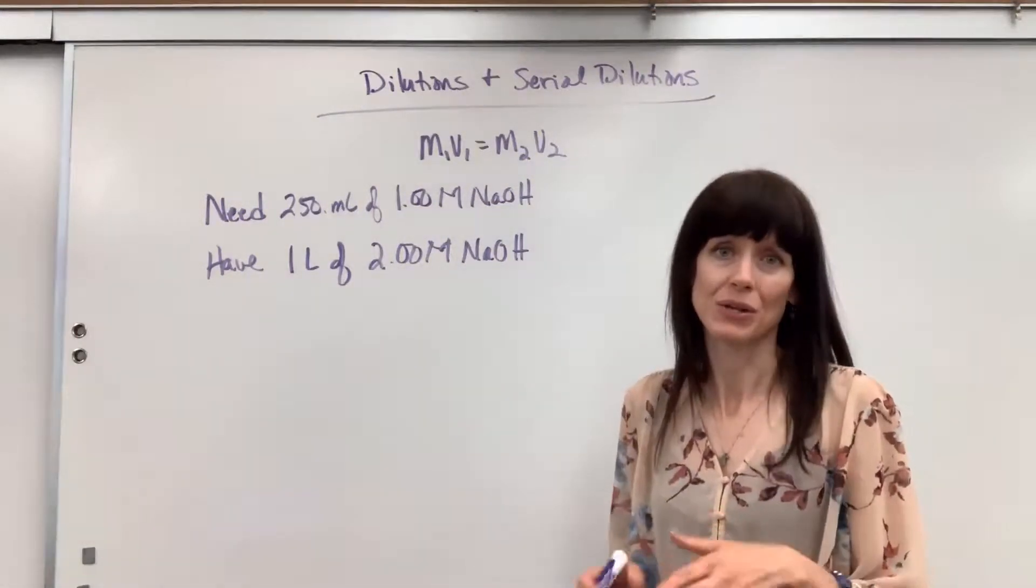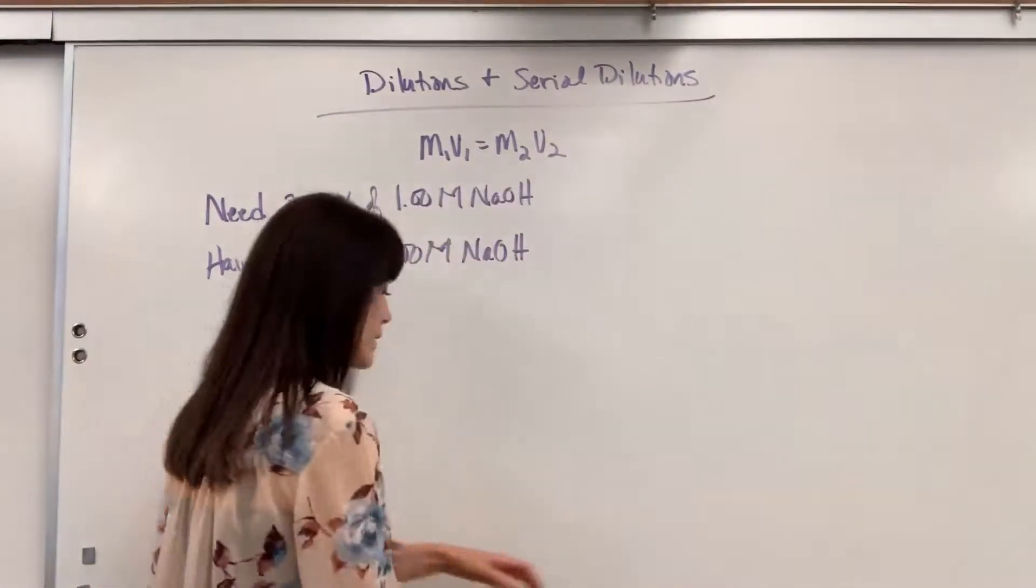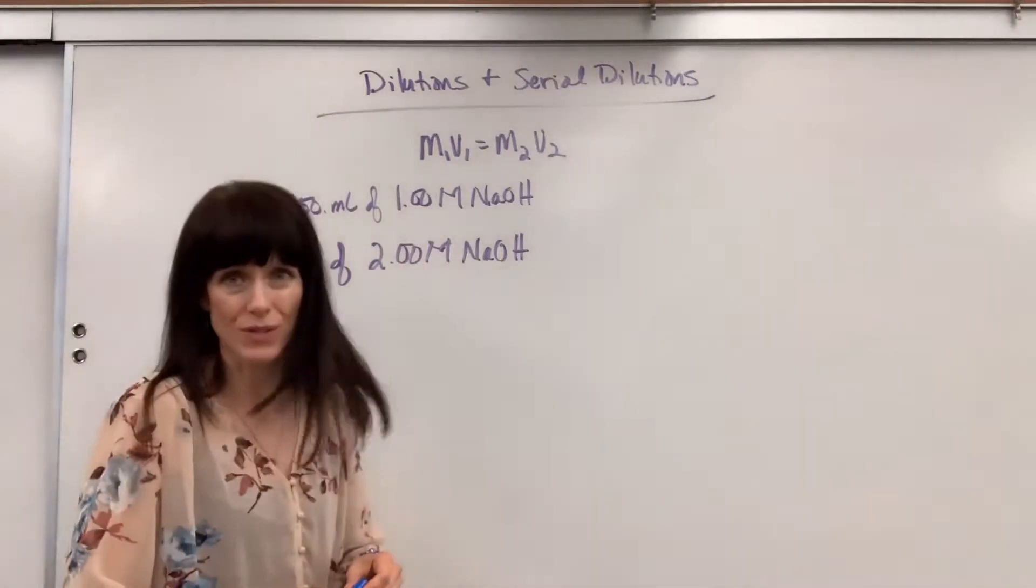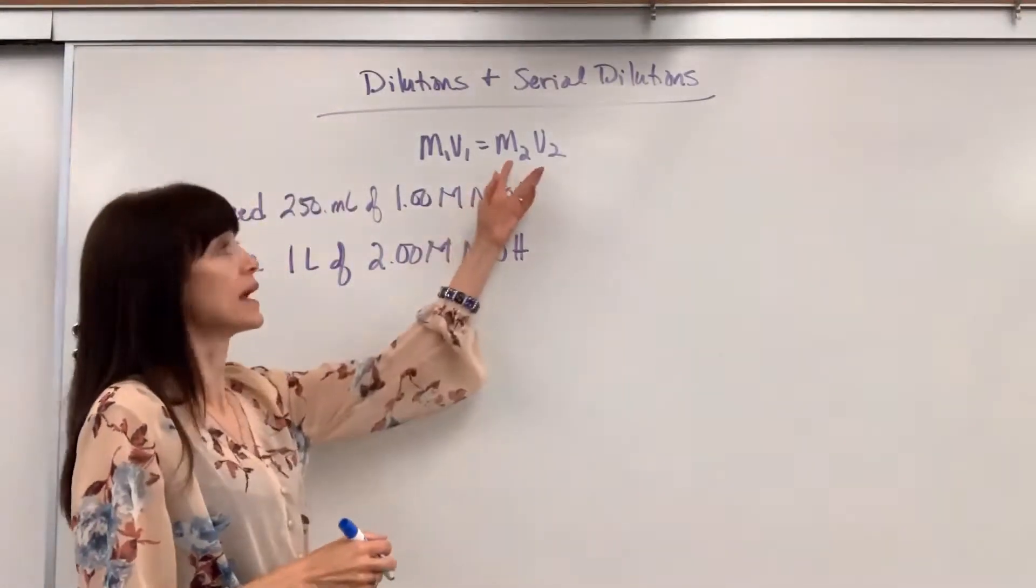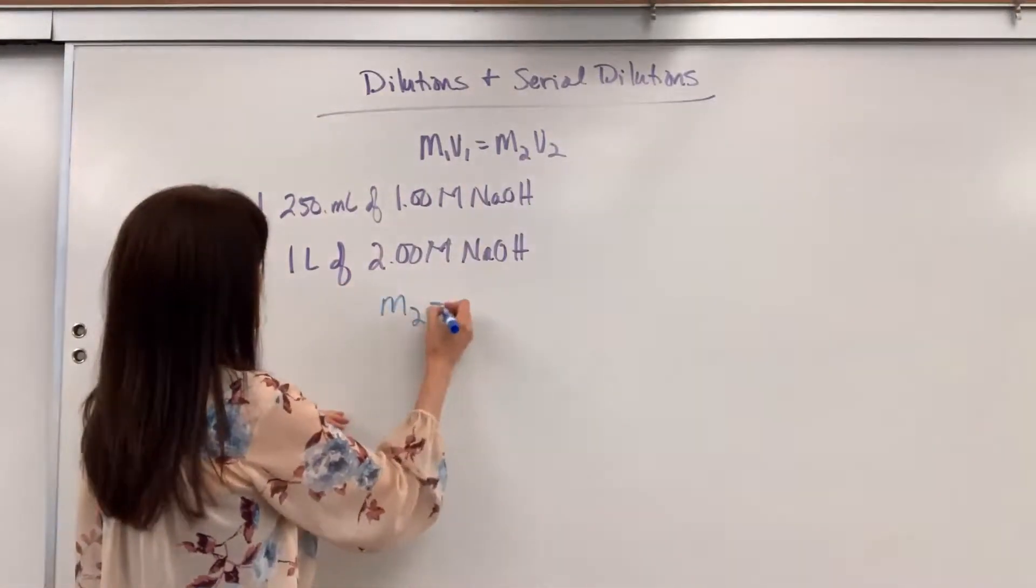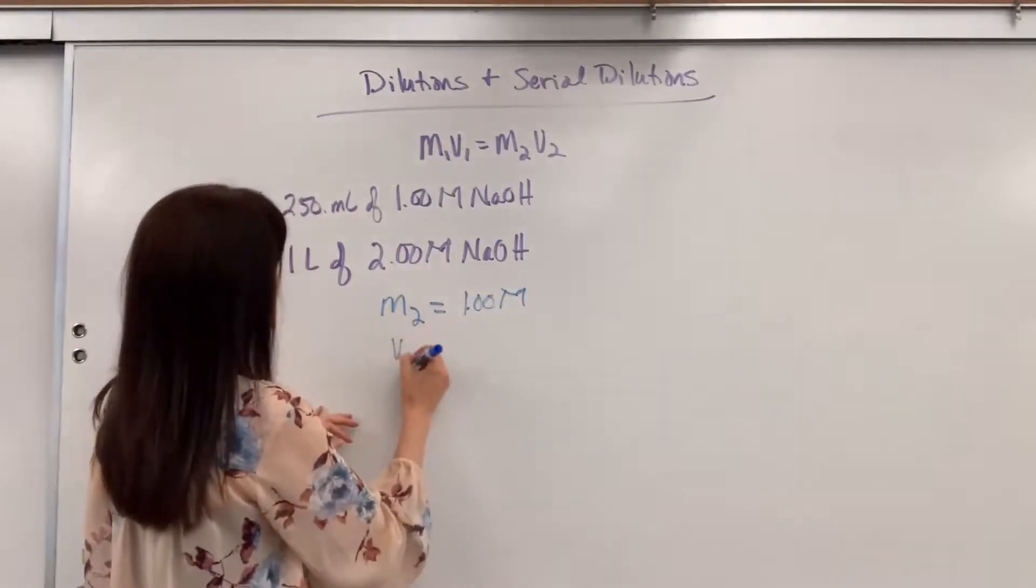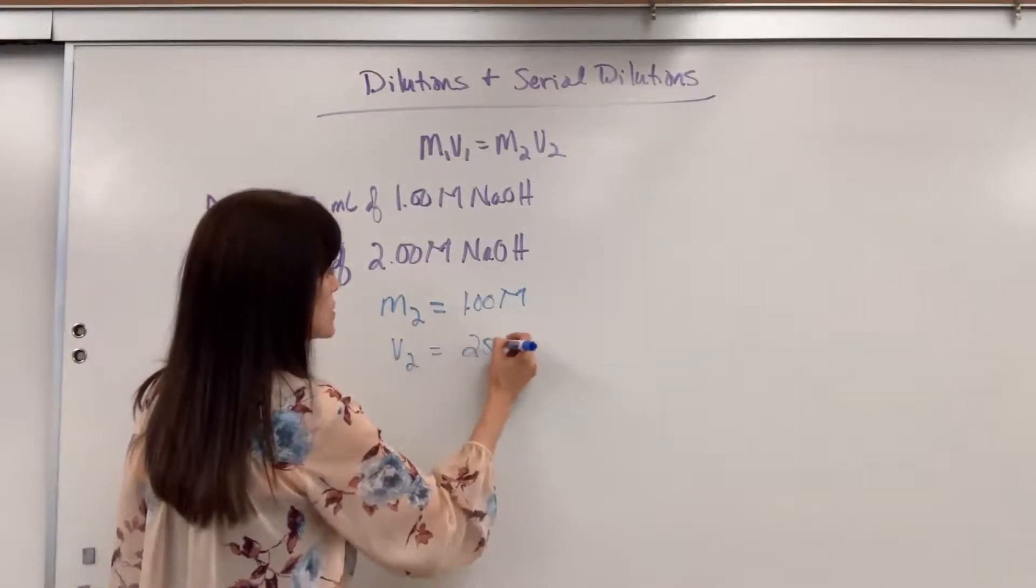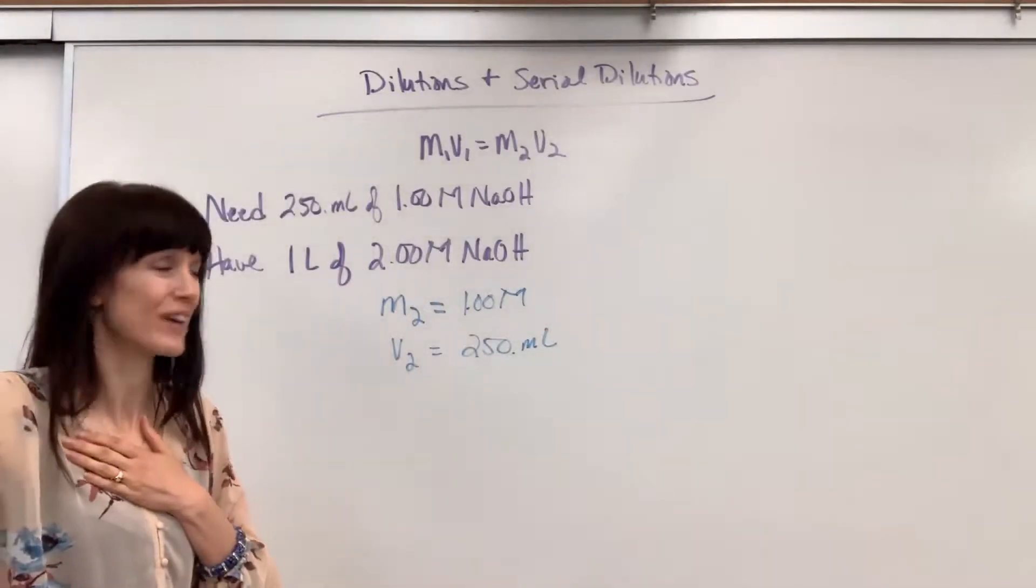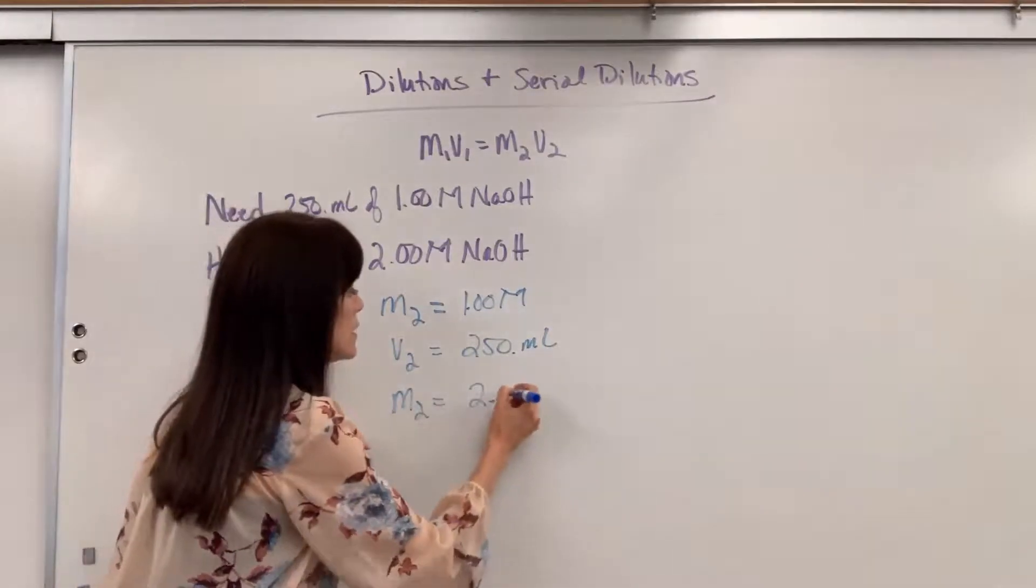You get your labeling correct, you're going to be fine. So we want to end with 250 mils of a one molar solution. That is going to be my M2V2. I want to end with a molarity of one, and I want to end with a volume of 250 mils.